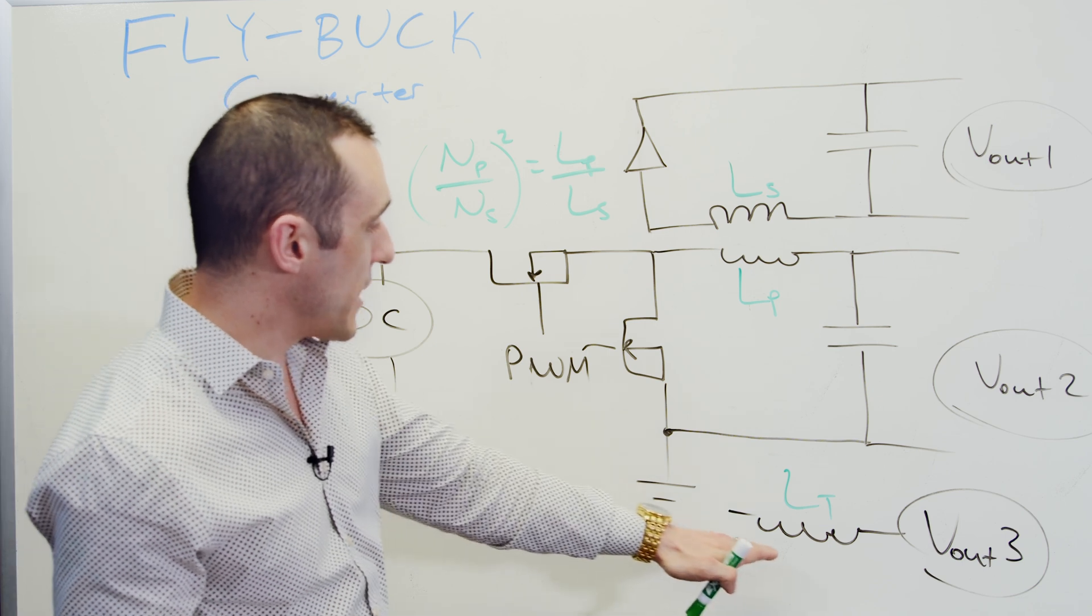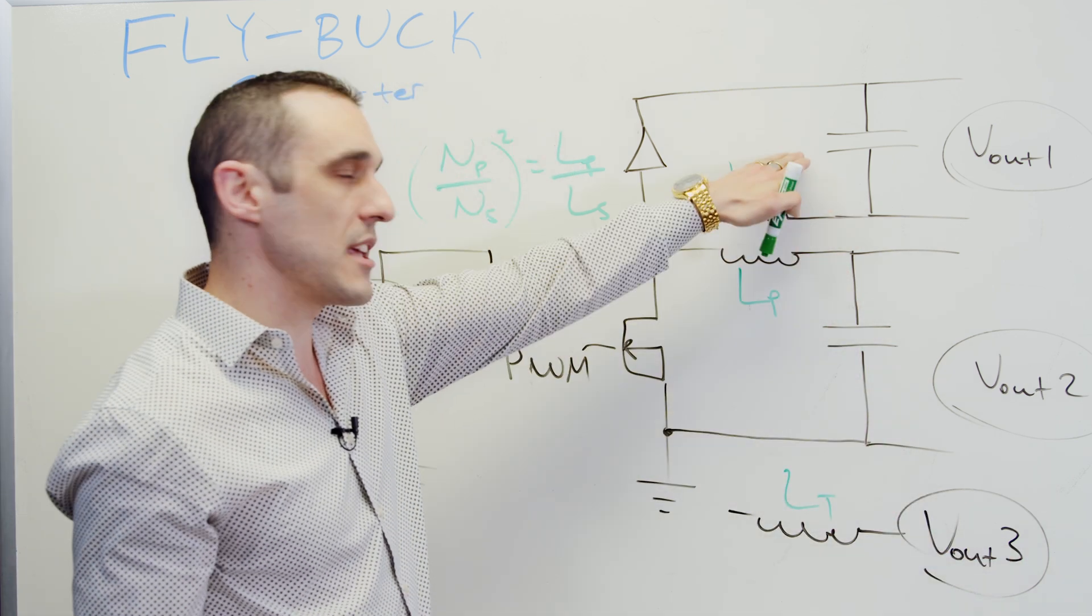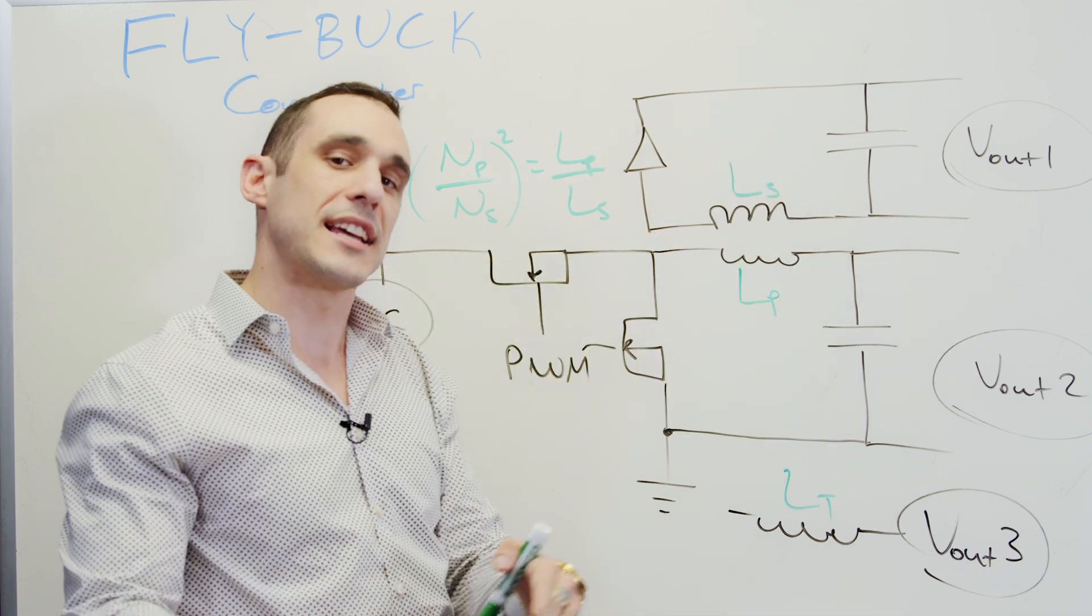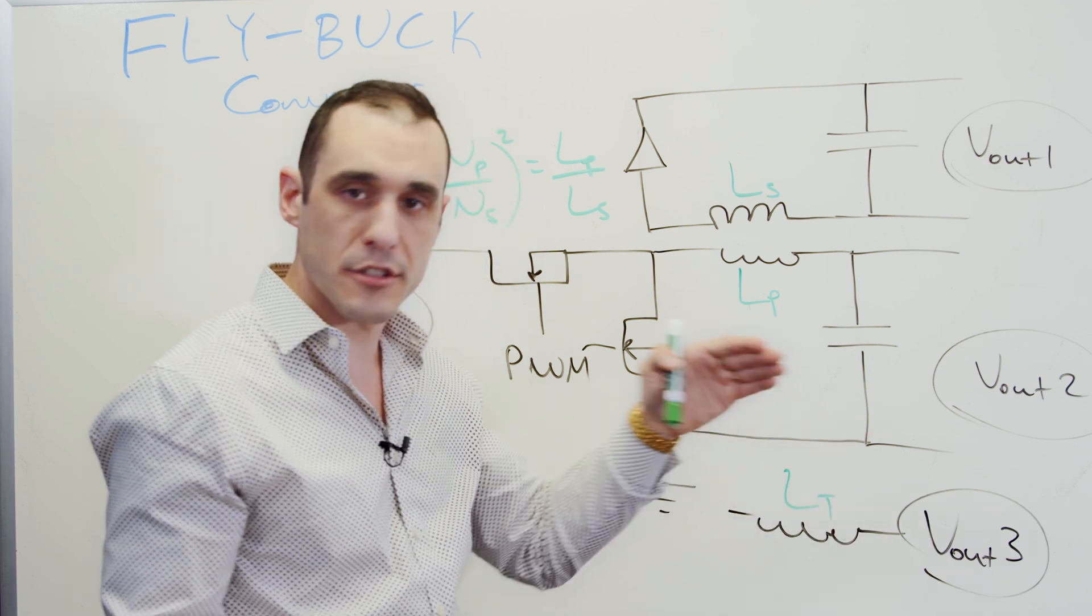Maybe you could couple down close to V out three and then put this through an LDO. Same thing maybe with V out one. So you can get a little creative as far as how you reach the final voltage on this secondary and tertiary rail.